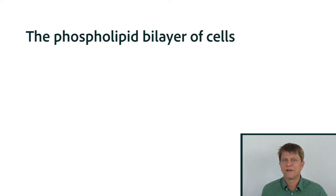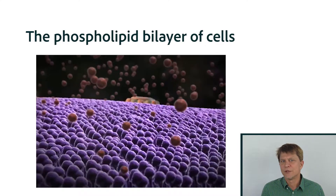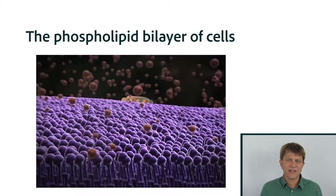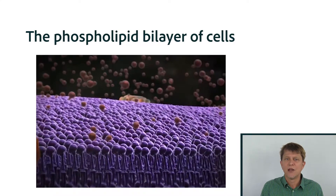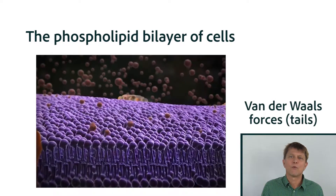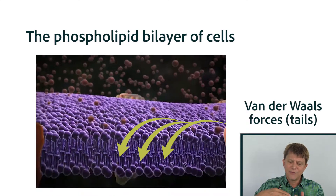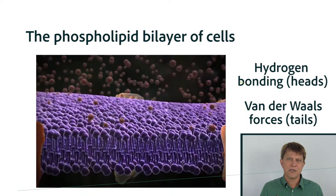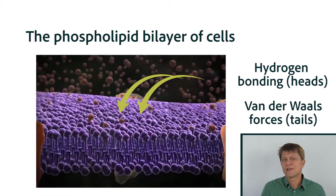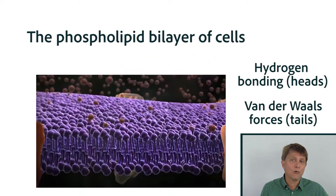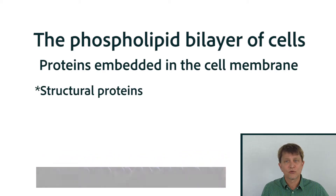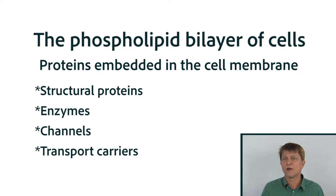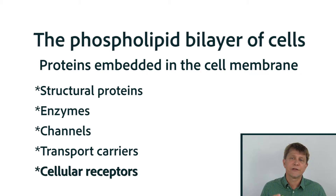Human cells are made of a phospholipid bilayer. The phospholipid bilayer is constantly moving a little bit, and that bilayer is held together by various attractant and repelling properties of the molecules. There are van der Waals forces, which allow the lipid-soluble tails to attract each other, and then there's hydrogen bonding that allows the heads to be attracted to each other. On the surface of the phospholipid bilayer, there are different proteins, including structural proteins, enzymes that speed up reactions, channels and transport carrier molecules, and also cellular receptors.